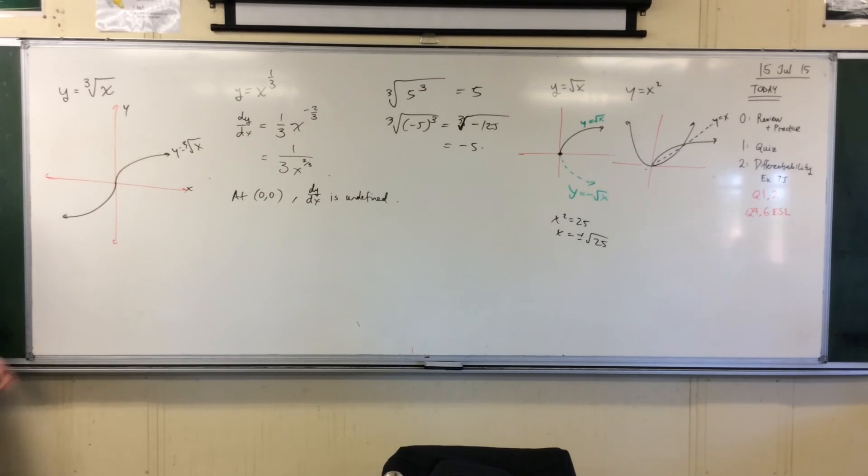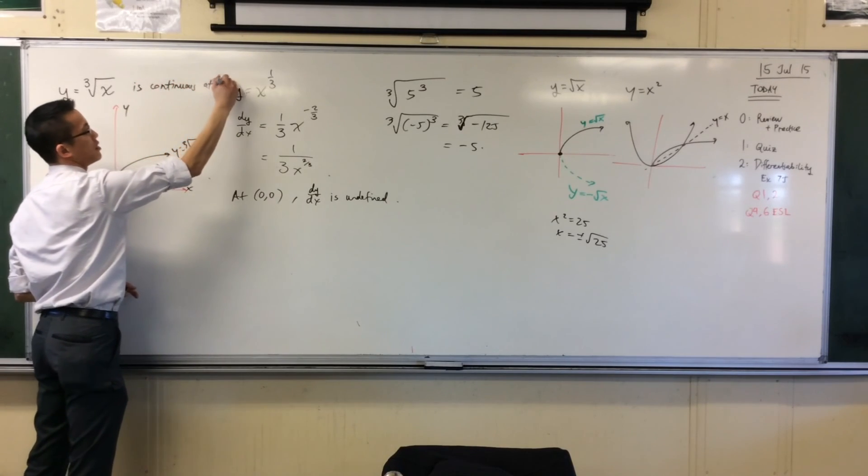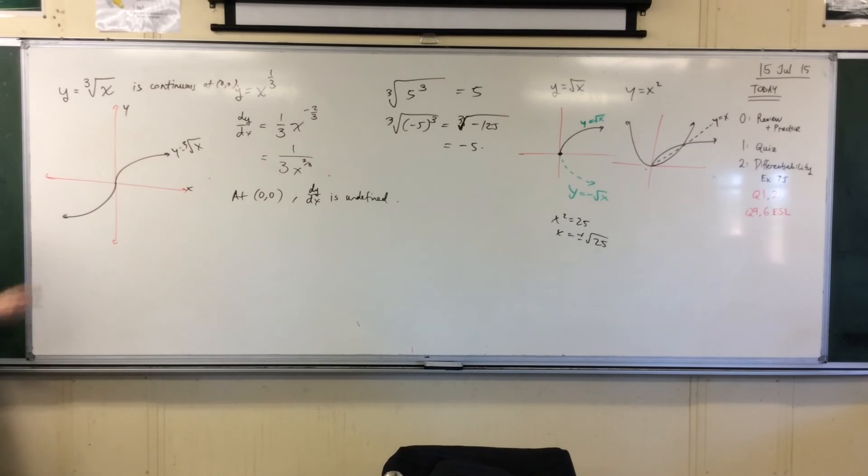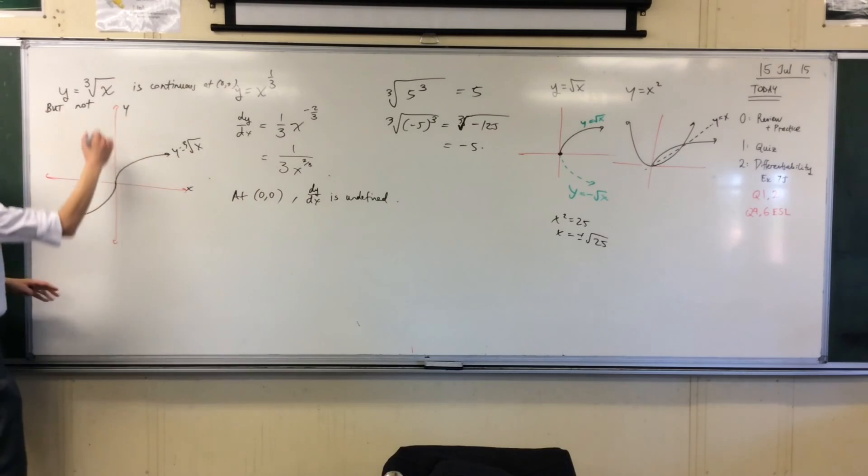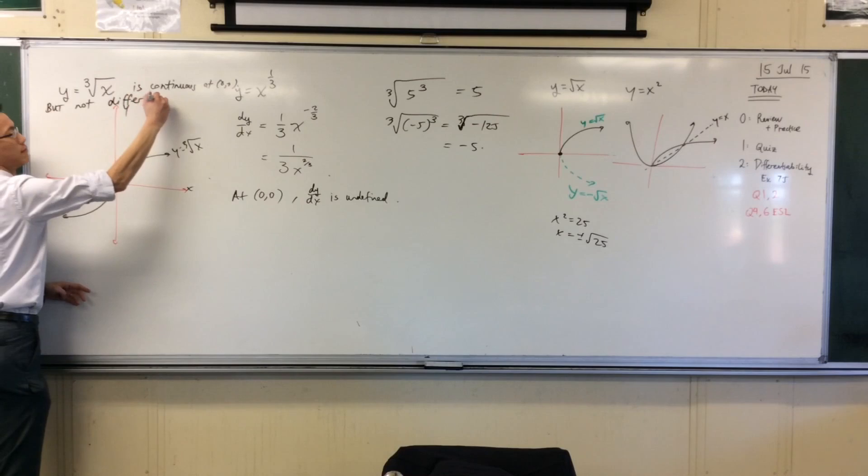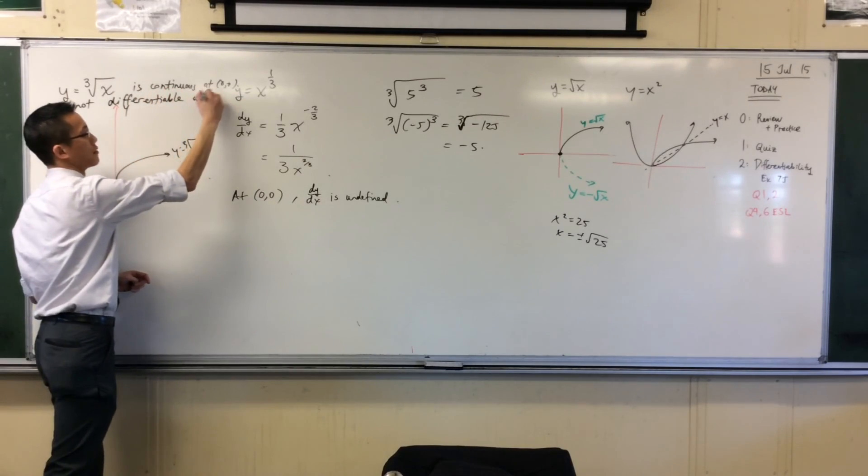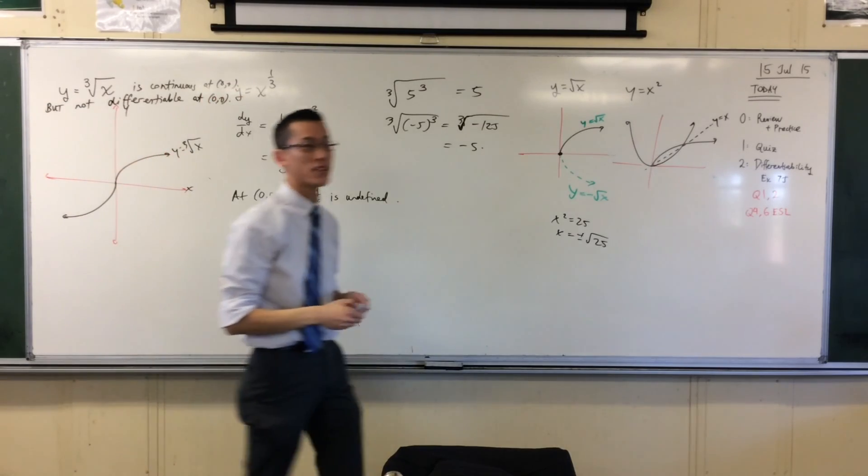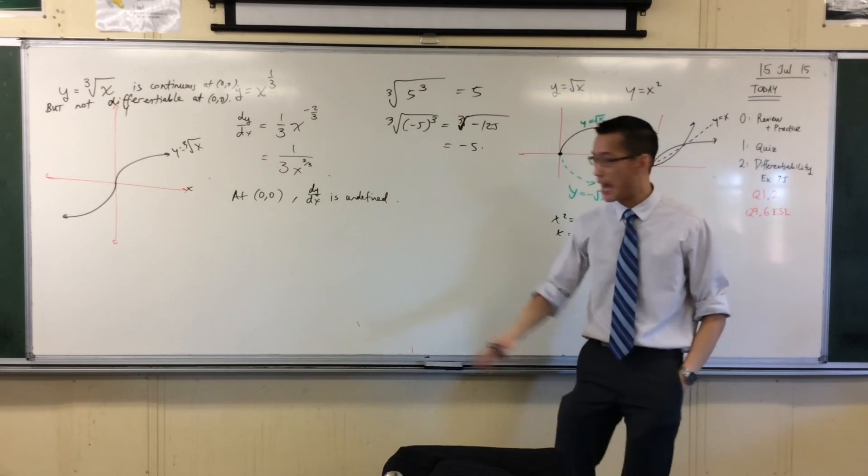So what can we say about this thing? This graph here, the cube root of x, is continuous at (0, 0). There's no breaks in the curve. It's nice and smooth. I don't have to pick up my pen. But it's not, you can't find a derivative. You can't differentiate and evaluate at that point. So what we say is, it's not differentiable. You can't differentiate it at that point. Of course you can differentiate at a whole bunch of other points. In fact, every other point. Just that one. That's the problem. Vertical tangents give you this issue.